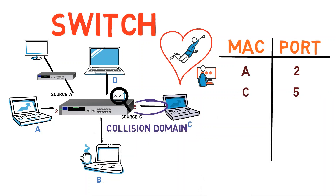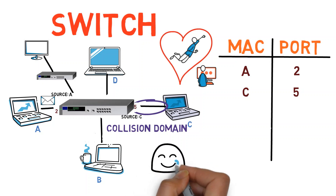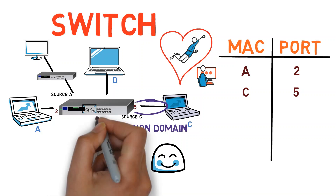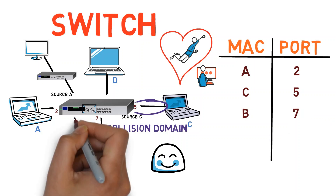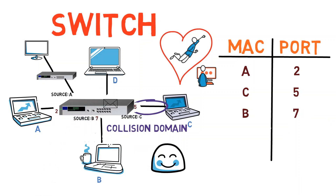This time, since the frame is destined to A's MAC address, and since the switch knows that address, the frame can be forwarded to port number 2 and port number 2 only. Next, B sends a message to C. The switch creates a mapping between port number 7 and B's MAC address, which appears as its source address field. The switch can also forward the message to C, as it already knows its address. In general, the switch uses the source address field of Ethernet frames to dynamically learn what addresses reside behind every port.